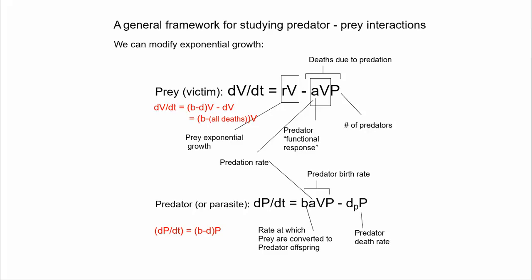In the bottom equation, we're saying the predator population, dP/dt, is a function of its birth rate. And it's the rate at which that population is growing as fueled by the prey population. So again, AV, that conversion factor and the number of victims, minus some death rate of the predators.